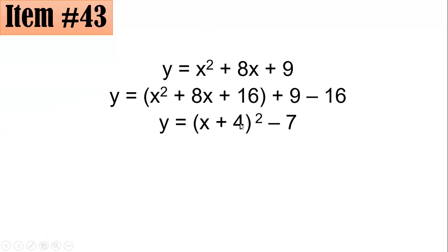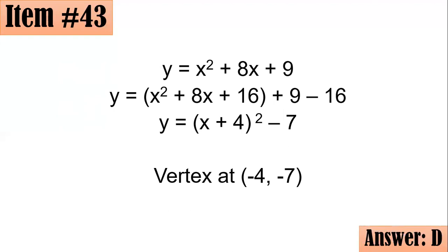9 minus 16 is negative 7. And this is now the vertex form of this parabola. And remember, to get the vertex, this is x minus h quantity squared plus k. So the vertex at h,k, so x plus 4, just change the sign, negative 4. And here, just copy it, negative 7. Hence, the vertex of this parabola is negative 4, negative 7. That's letter D. I hope you got it correctly.